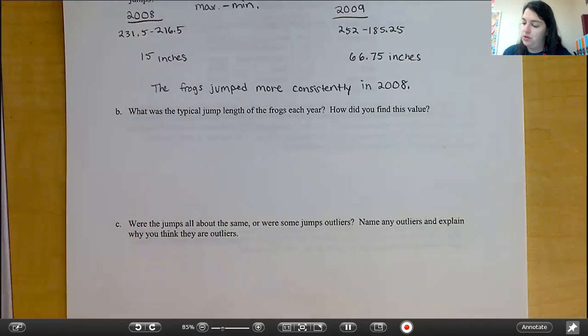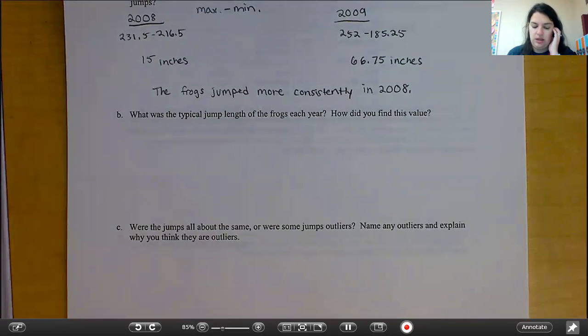Part C asks, were the jumps all about the same, or were some jumps outliers? Name any outliers and explain why you think they were outliers. Go ahead, remember, outliers are really small values or really big values. Go ahead and answer that question.